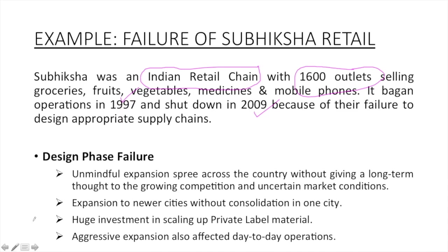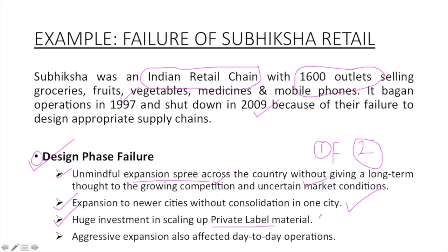Let me talk about the failure of the company at each and every decision level. First, at the design phase level: the company expanded vehemently and unmindfully all over India, locking down a huge investment for the expansion. Subhiksha Retail ignored the competition and didn't take into account uncertain market conditions. As the company was expanding, it didn't consolidate its position in one city; rather it kept opening new outlets in different cities and could not catch up to the competition growing there. Having locked its funds in expansion, it could not do anything. Third, the company invested hugely in coming up with its own private label material, again locking down huge funds. Due to all this design negligence, the company was not able to execute its day-to-day operations.